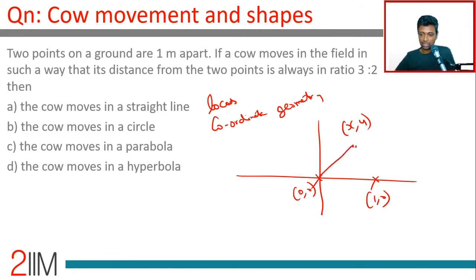This distance to this distance is in the ratio three is to two. Plug that in and then think about what expression turns out for (x,y). That's all we need to do. And so this distance is root of x square plus y square. This distance is root of (x minus one) the whole square plus y square, or (one minus x) the whole square plus y square.